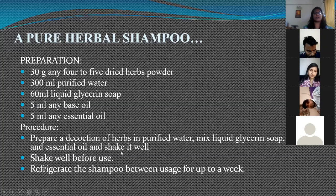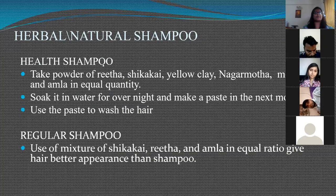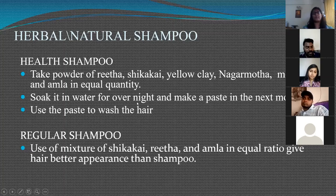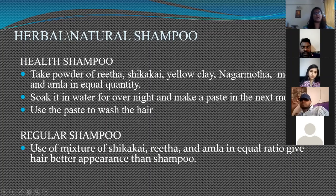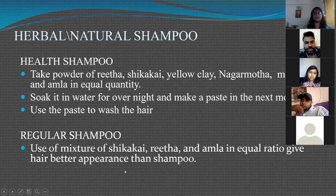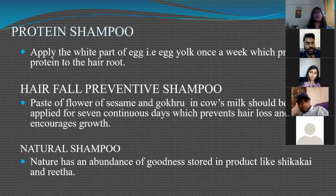A natural herbal shampoo can also be made from rita, shikakai, yellow clay, nagarmota, and amla soaked in water overnight, made into a paste, and used to wash the hair. Another example is a mixture of shikakai, rita, and amla (gooseberry) in equal ratios to give the hair a good appearance.